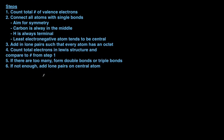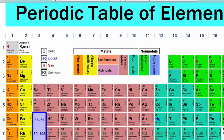For the first example, let's draw the Lewis structure of CH₂Br₂. The first step is to count the total number of valence electrons. We have carbon, two hydrogens, and two bromines. Carbon has four valence electrons — you take a look at the periodic table and see which column that element is in. Carbon is in the fourth column, and you skip the transition metals, so carbon has four valence electrons.